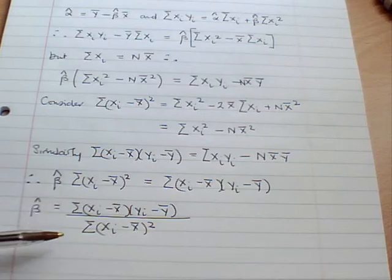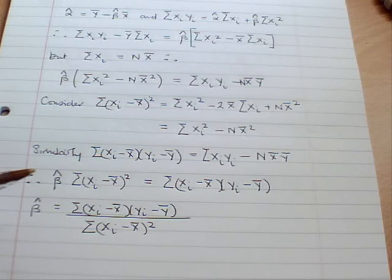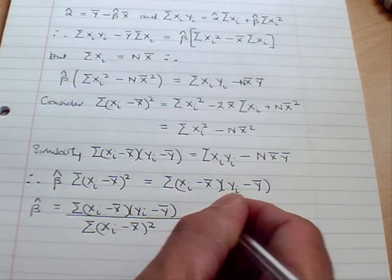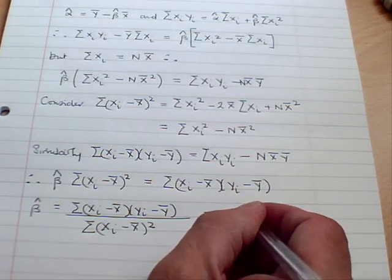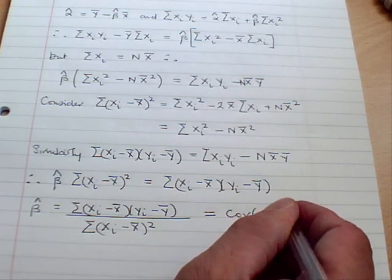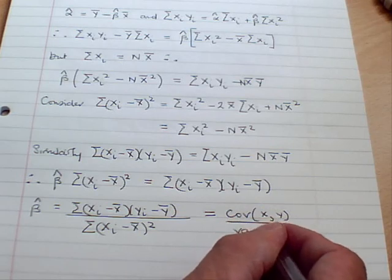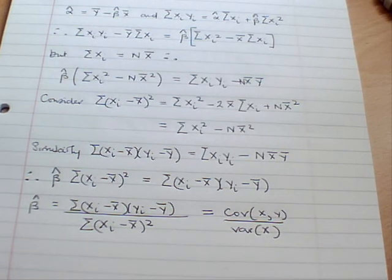Now this is quite an interesting way to write this because if we were to divide both the numerator and the denominator here by the number of observations, then we'd get estimates of first of all the covariance of x and y and secondly the variance of x. So we can write this expression here as the ratio of the sample covariance of x and y to the sample variance of x.